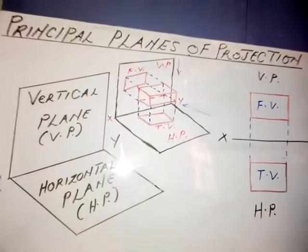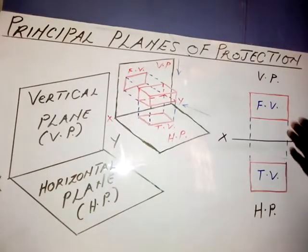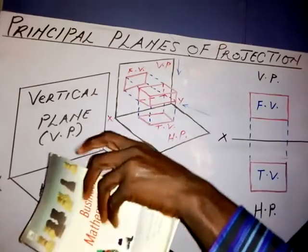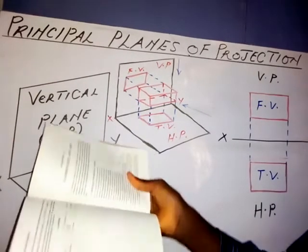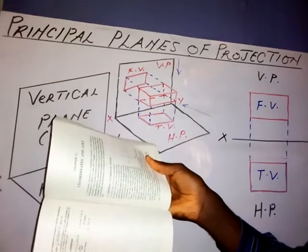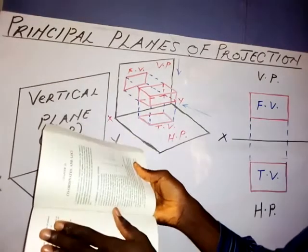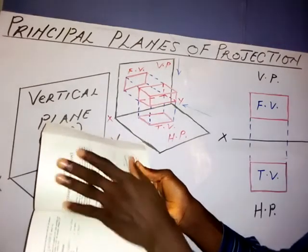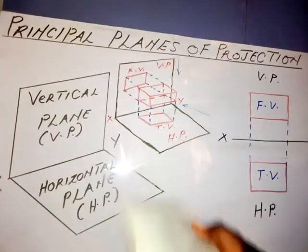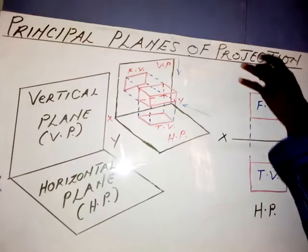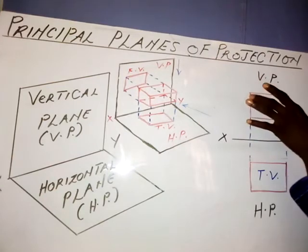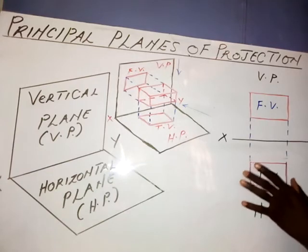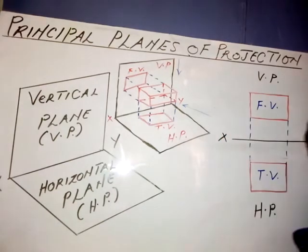These planes can also be represented in this form — it's like a book. If I open this book like this, this is the vertical plane and this is the horizontal plane. I can open it like this, and this still remains my vertical plane, this still remains my horizontal plane, and the line that separates the two planes is known as the x-y line. So the front view is drawn here and the top view or plan is drawn here.